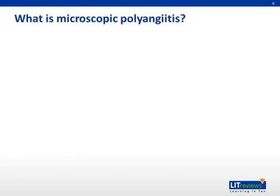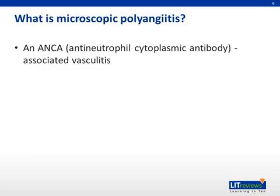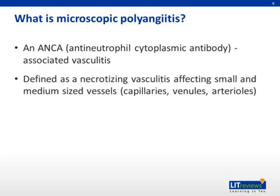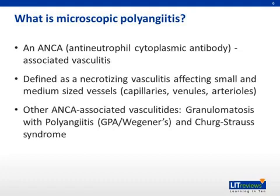MPA, or microscopic polyangiitis, is an ANCA-associated vasculitis. The vasculitides, which are a group of autoimmune diseases that attack the vasculature, are often divided by the size of the vessel they affect, namely small, medium, and large. Additionally, vasculitides are also grouped based on the result of a laboratory test, the ANCA. Two other types of diseases that have positive ANCA tests are granulomatosis with polyangiitis, or GPA Wegener's, and the Churg-Strauss syndrome. MPA is described as affecting small and medium-sized vessels, such as capillaries, venules, and arterioles. It is a necrotizing vasculitis based on pathology indicating areas of necrosis in the affected vessels.